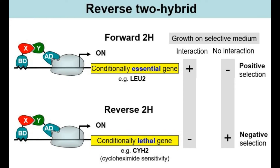There are multiple types of two-hybrid systems. A reverse two-hybrid is a modification of the conventional yeast two-hybrid system in which the reporter gene that is expressed is conditionally lethal. So if your proteins do indeed interact, the entire yeast colony will die because they will not be able to survive in that particular media.